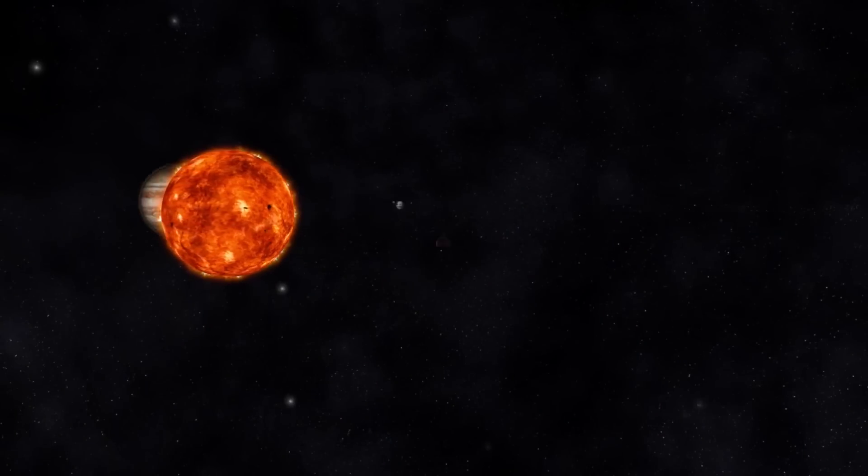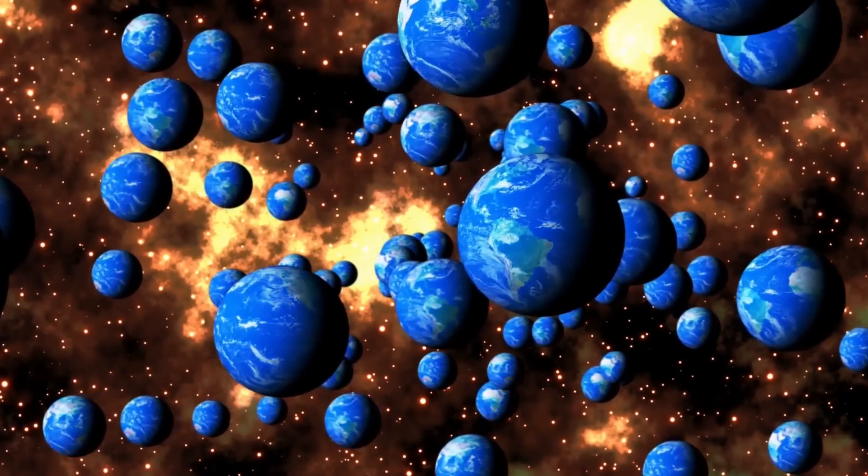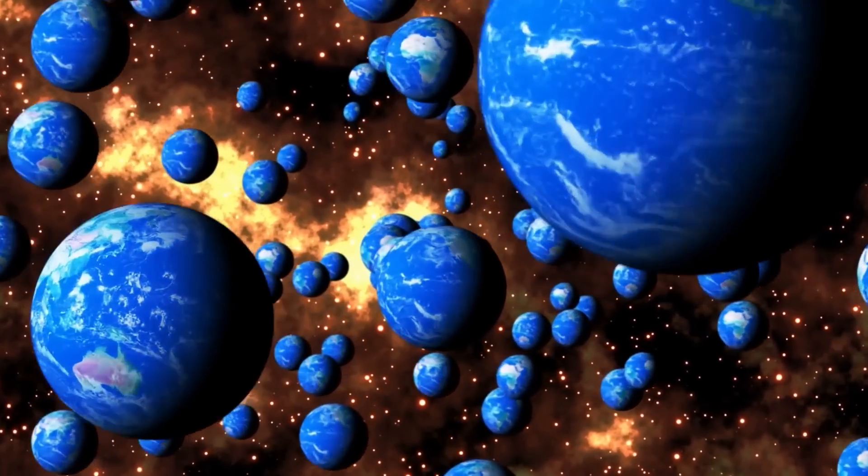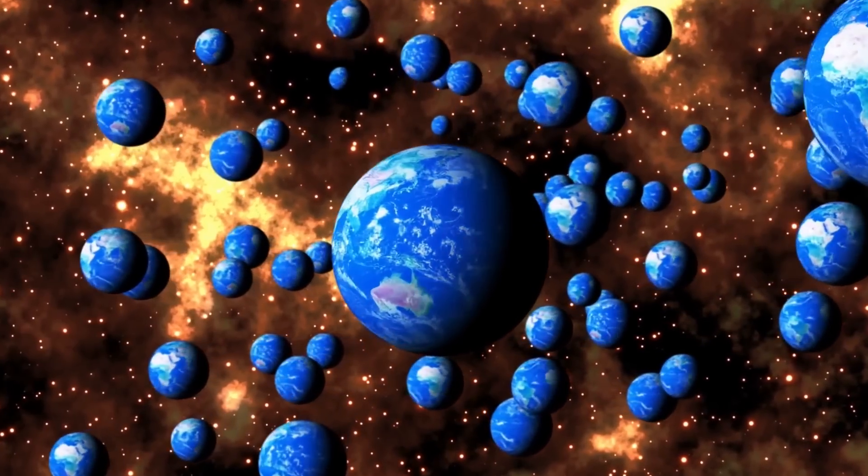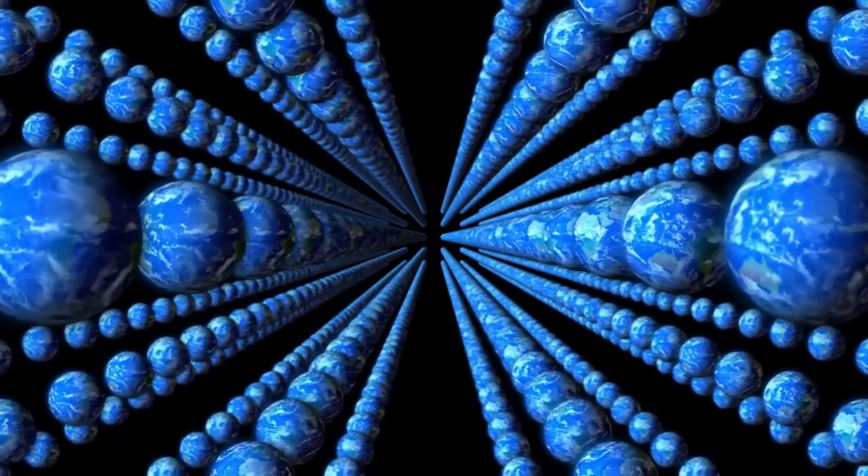Twenty years ago, no other planets were known apart from those in our solar system, but since then, more than 4,000 other planets, called exoplanets, have been discovered orbiting other stars. NASA estimates that the true number of exoplanets could be trillions.